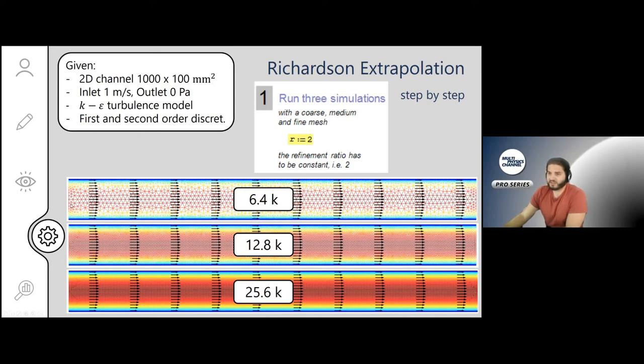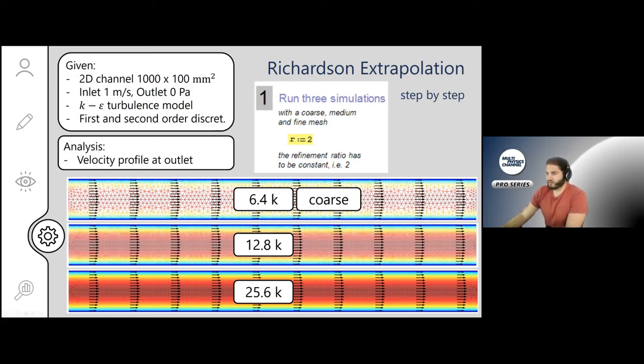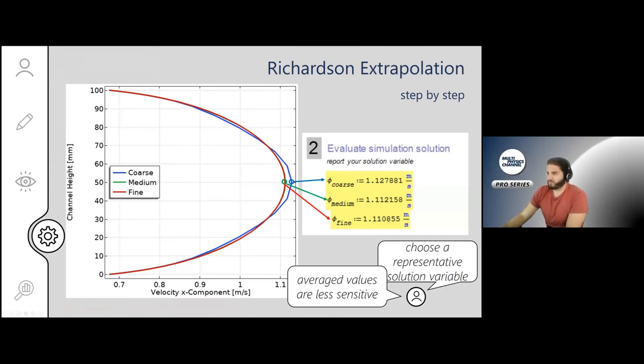All right, so we do this example with a channel, a 2D channel which is a meter long and 10 centimeters in height. We have an inlet here that is one meter per second and an outlet that is zero pascal. It's one of the most convenient ways to perform a CFD simulation: you have one inlet with a velocity and an outlet with a prescribed pressure. We do this for first and second order discretization, and what we want to know again is the velocity profile at the outlet. All right, this is the coarse, this is the medium, this is the fine mesh. We'll do just the first order discretization.